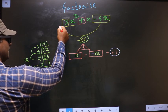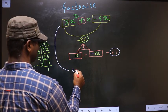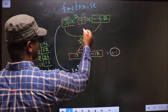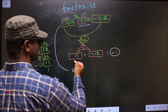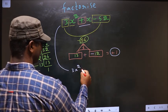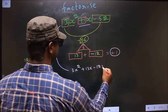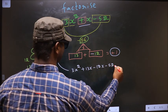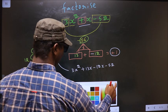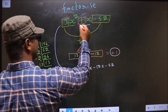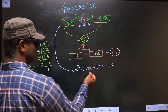Now you change this to 3x². In place of +1x, now you write this, that is +13x - 12x - 52. Did you understand? In place of +1x I have written this.